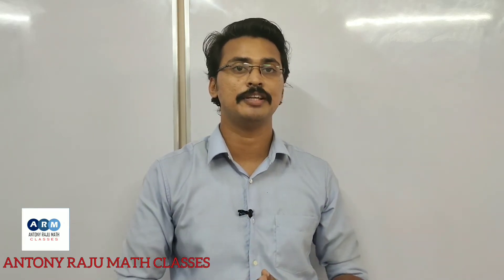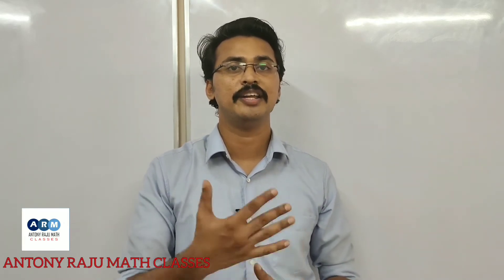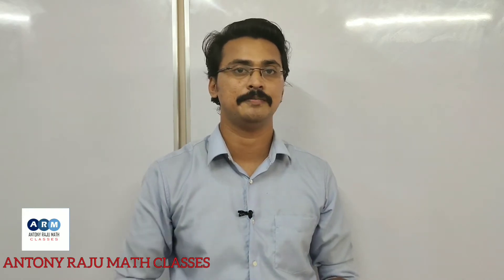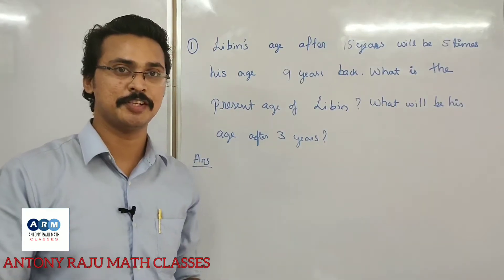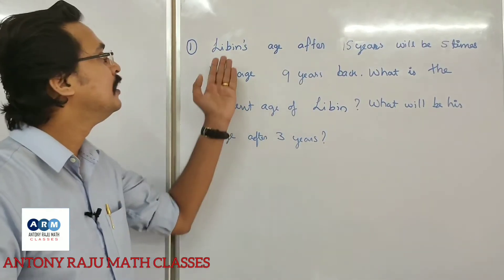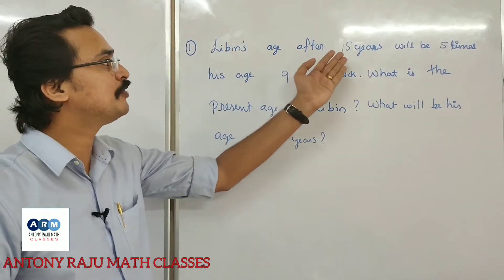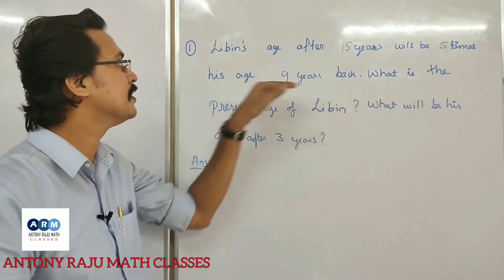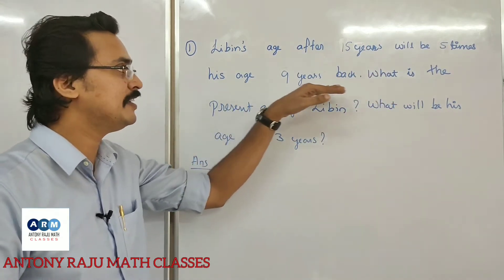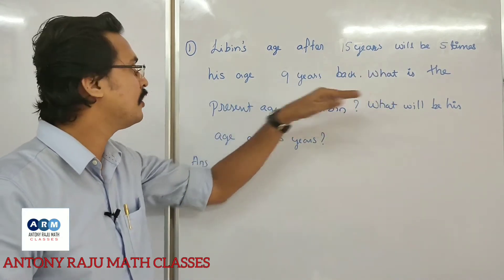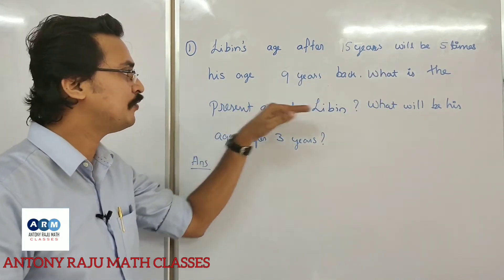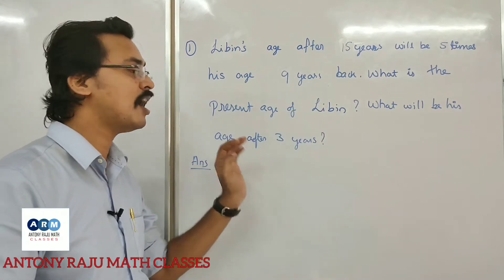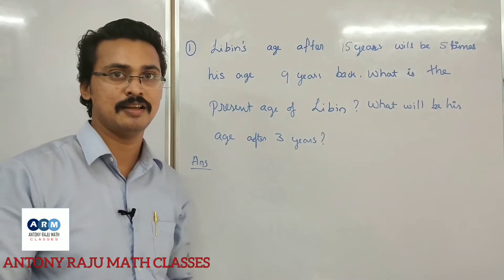We are going to try 5 questions. Let's try the first question. Lippin's age after 15 years will be 5 times his age 9 years back. What is the present age of Lippin? What will be his age after 3 years?